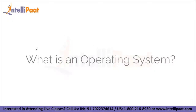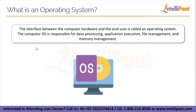What is an operating system? The formal definition goes something like this: the interface between the computer hardware and the end user is the operating system. The computer OS is responsible for data processing, application execution, file management, and memory management. To sum it up, it basically acts as a middleman between the user and the hardware of the computer.